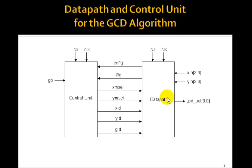Now we need to design the control unit which will control the timing of the whole thing. Here's the equality flag and the less than flag that come from the data path. And the control unit will tell the data path when to make xm select, ym select for the multiplexes high, when to set x load, y load, and g load high.